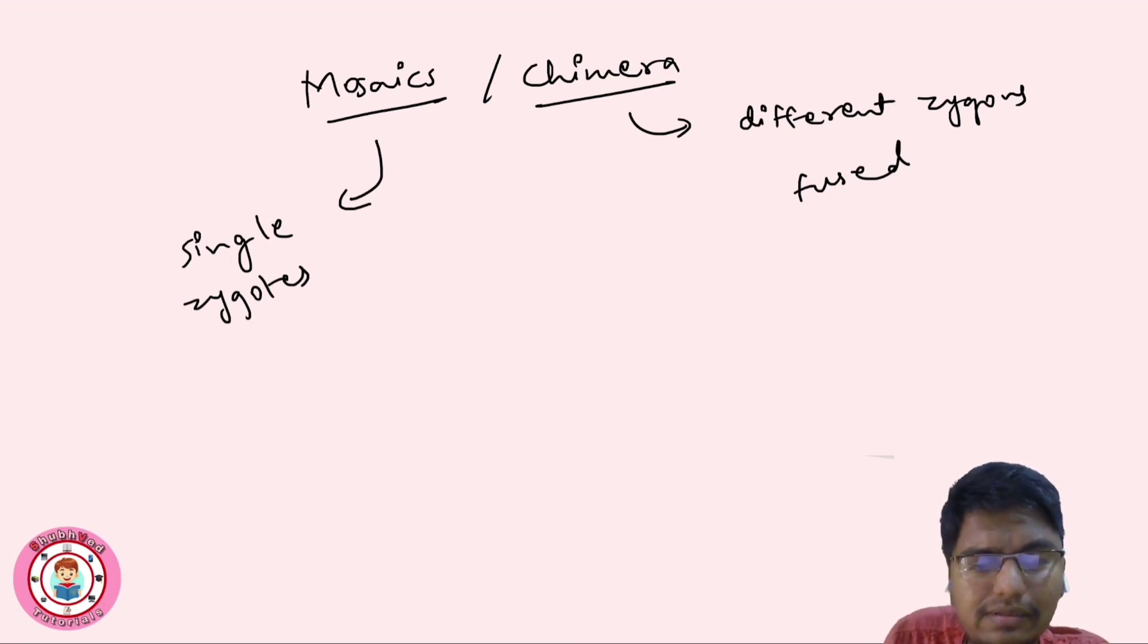Now in this, there are parts again: somatic mosaicism and germline mosaicism.